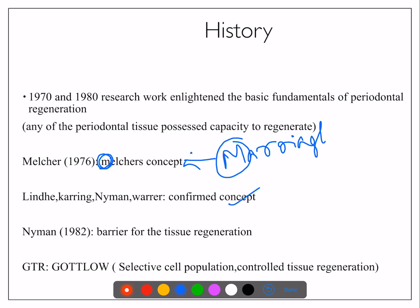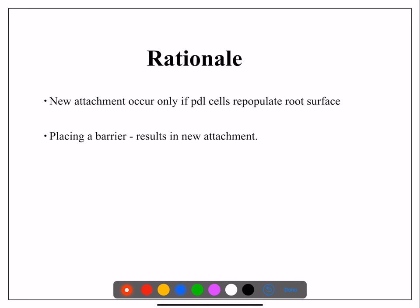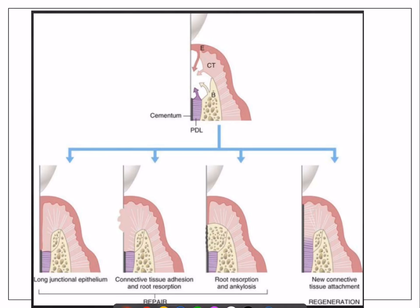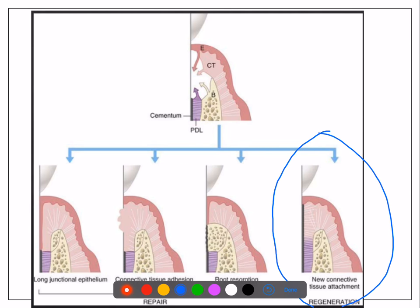So our hero is PDL cells. The GTR membrane concept was given by Gotlow — G for GTR, G for Gotlow. The rationale: placing a barrier gives better results for new attachment. As shown in the image, long junctional epithelium causes repair; connective tissue causes root resorption; bone causes ankylosis. Only when PDL cells come do we get regeneration. It is a competition — epithelium: cancelled; connective tissue: cancelled; bone: cancelled.